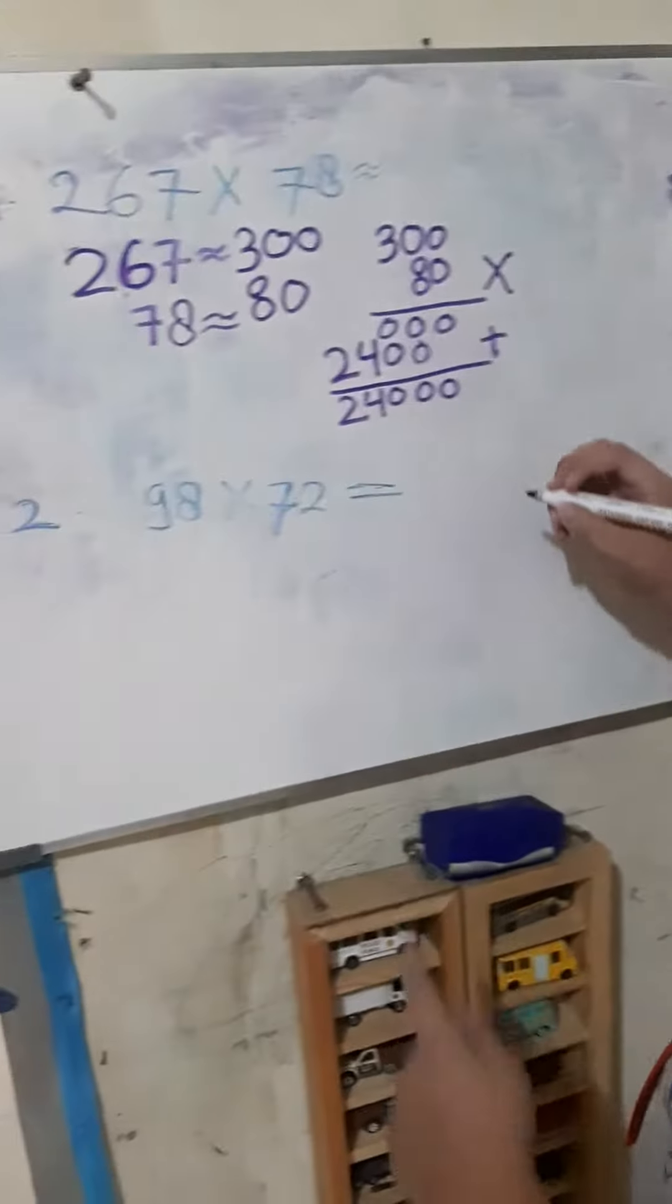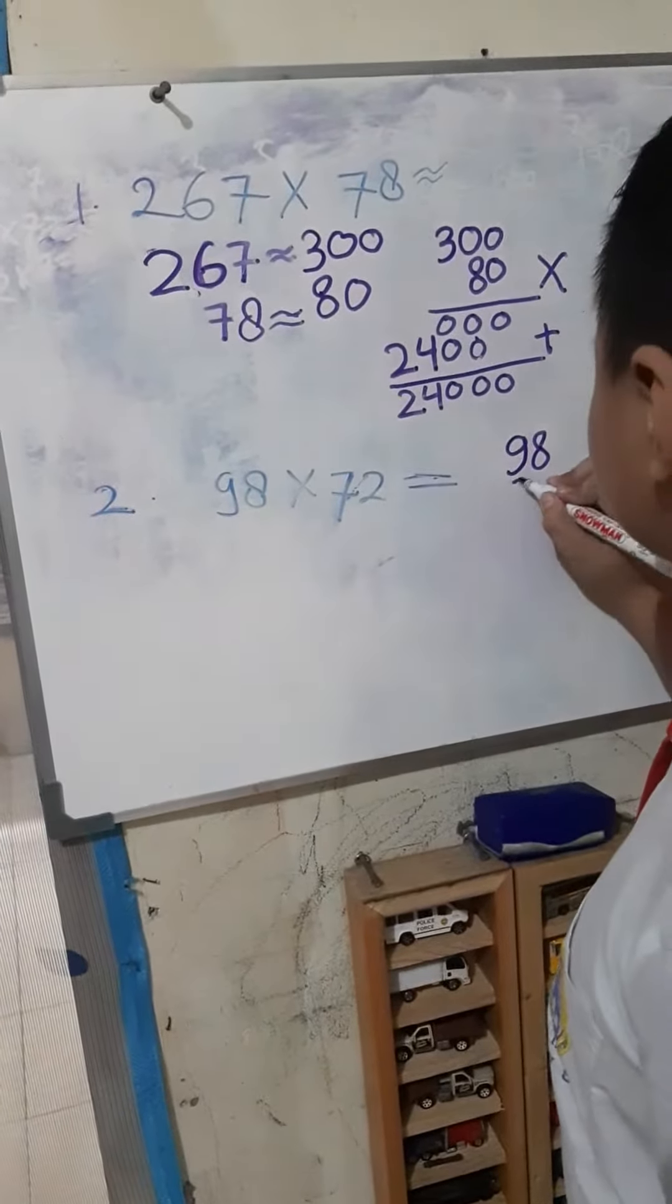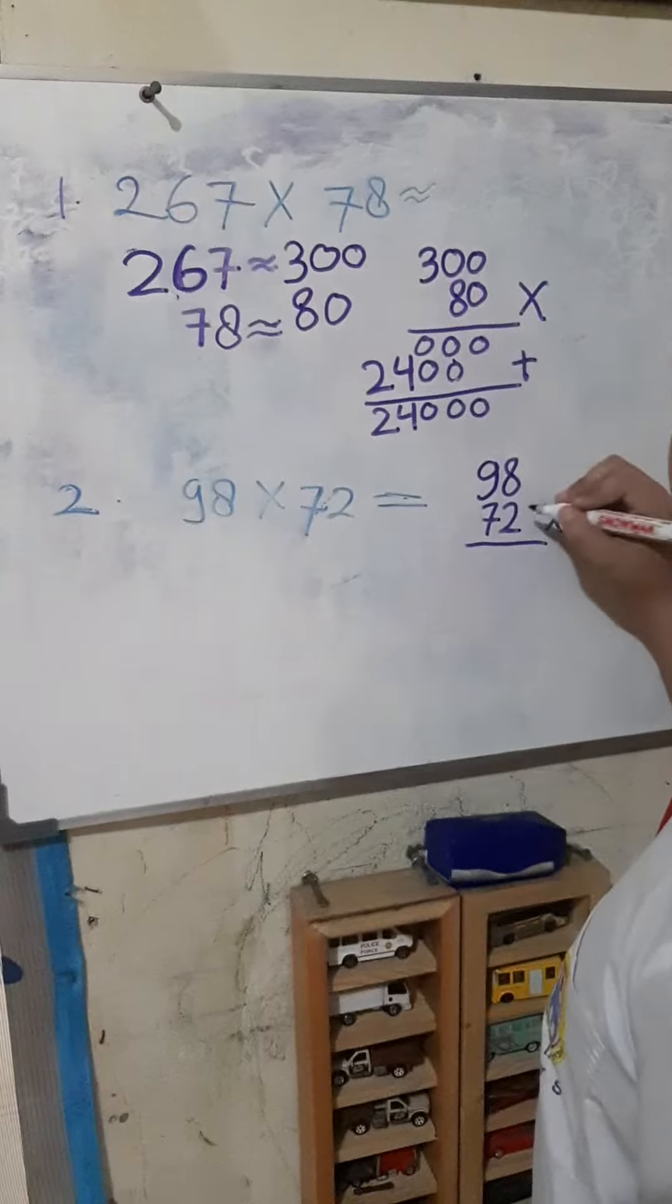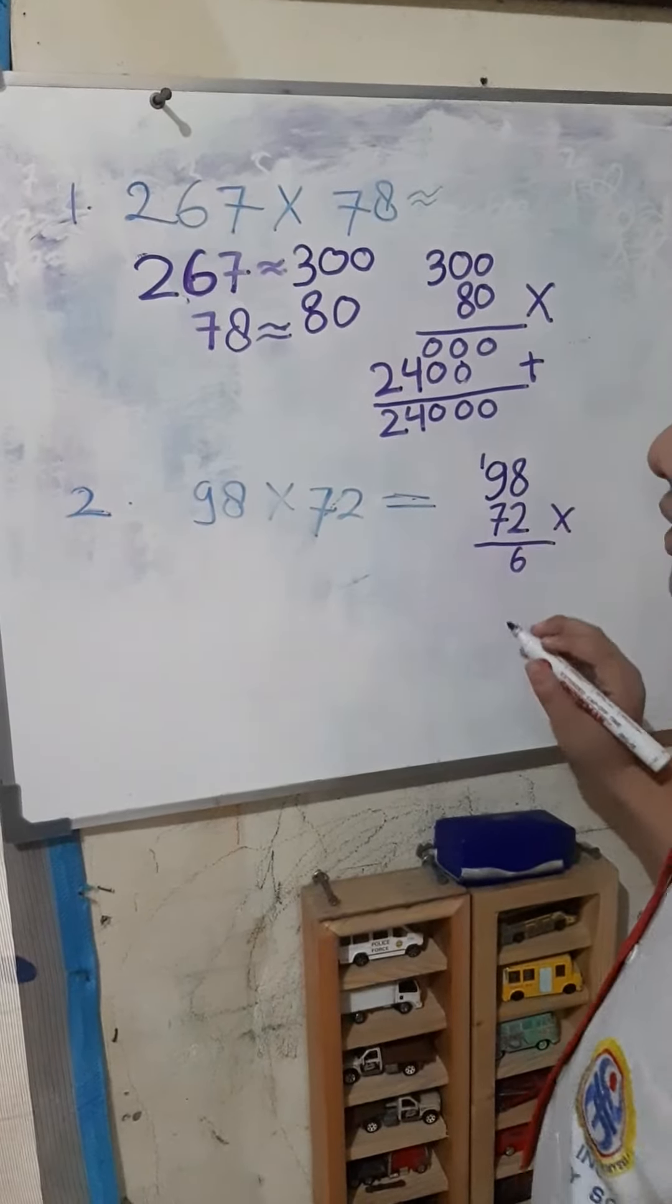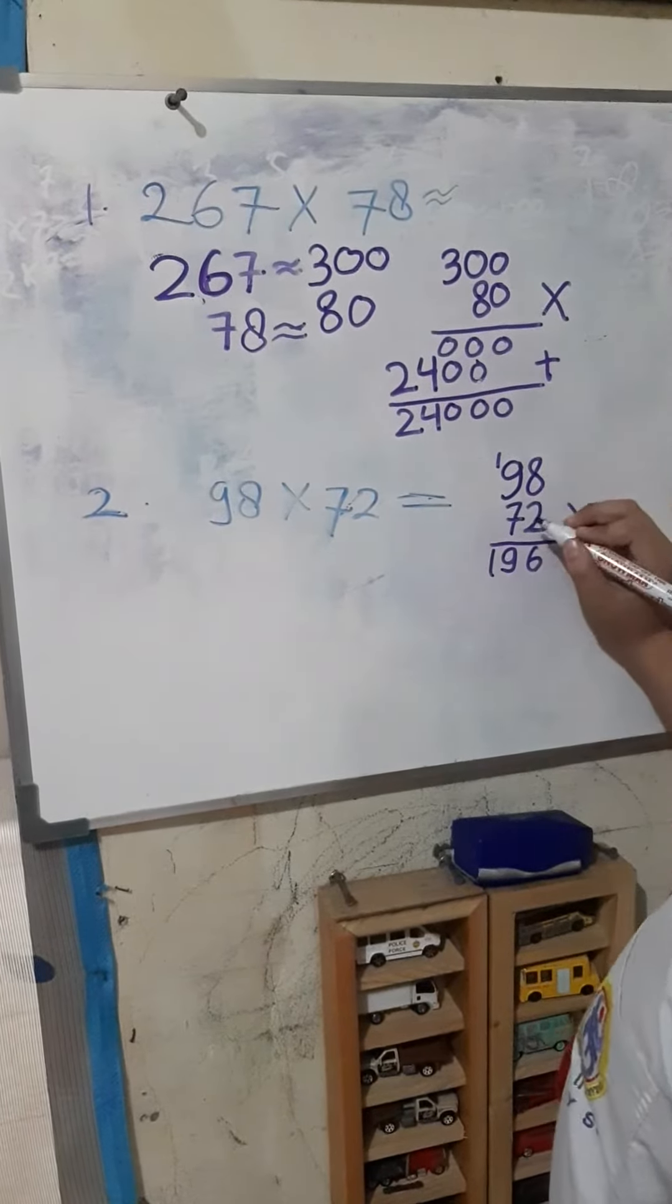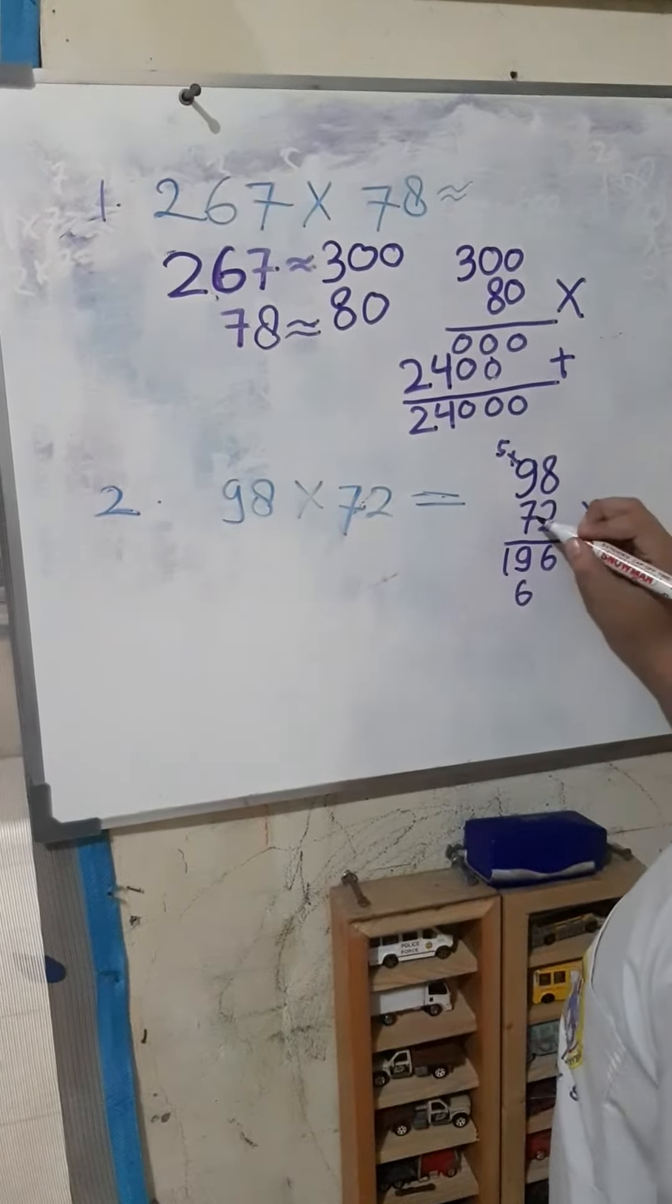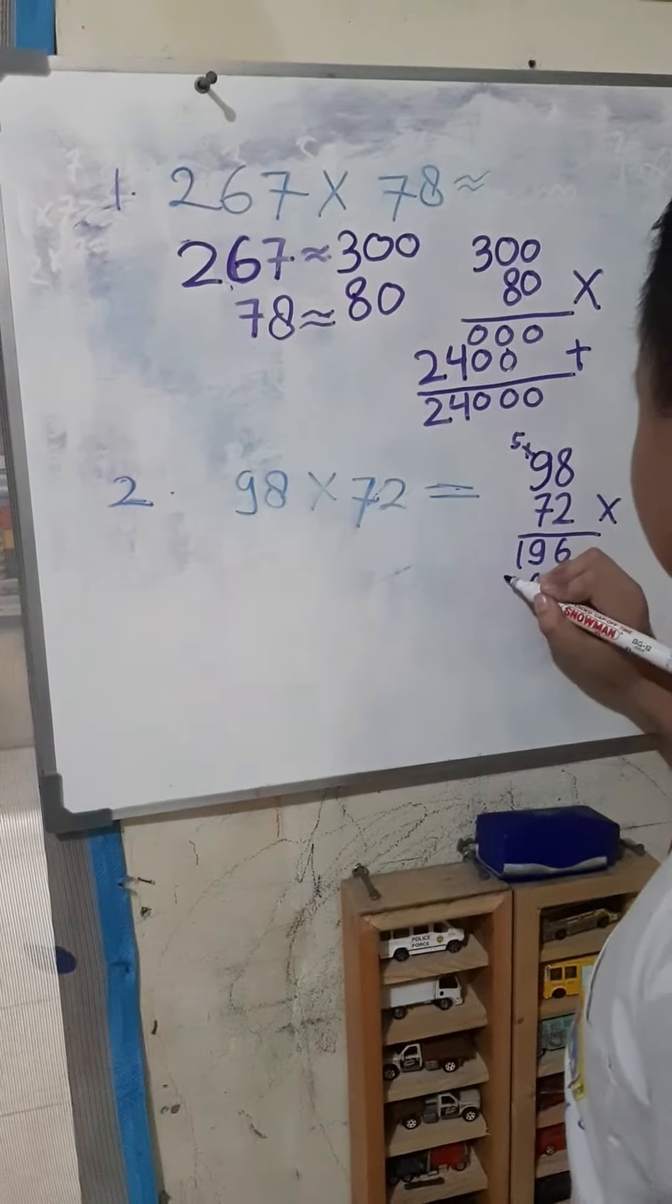Now number 2. 98 times 72. 2 times 8 equals 16. 2 times 9 equals 18 plus 1, 19. 7 times 8 equals 56. 7 times 9 equals 63 plus 5, 68.